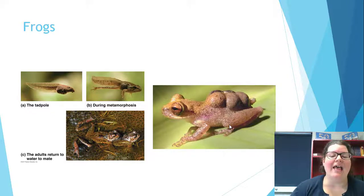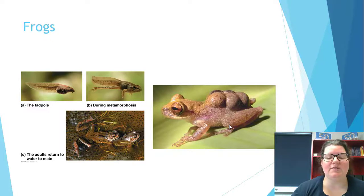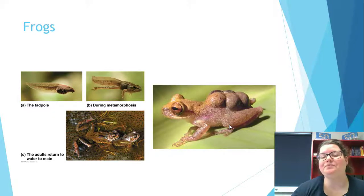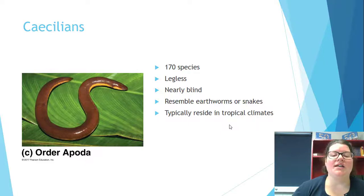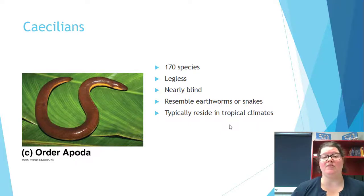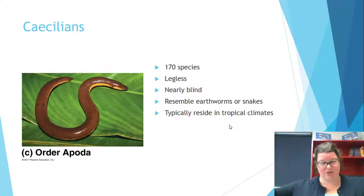Some interesting frog adaptations: you can see tadpoles, the half-frog half-tadpole during metamorphosis, frogs mating, and on the right a female frog carrying eggs under her back skin for protection until they hatch — an example of ovoviviparity in a frog. Caecilians are a separate amphibian group with very few species; they resemble earthworms and are often mistaken for them in tropical climates.